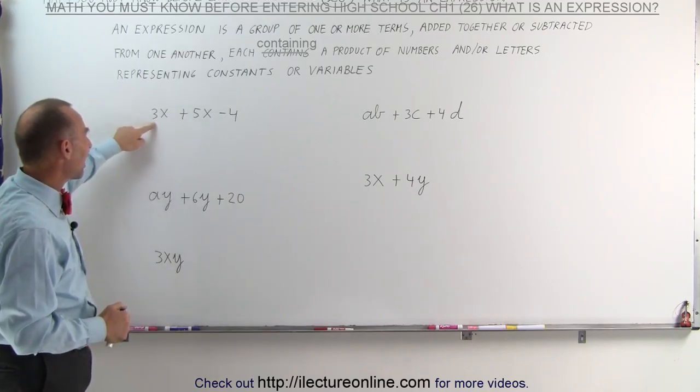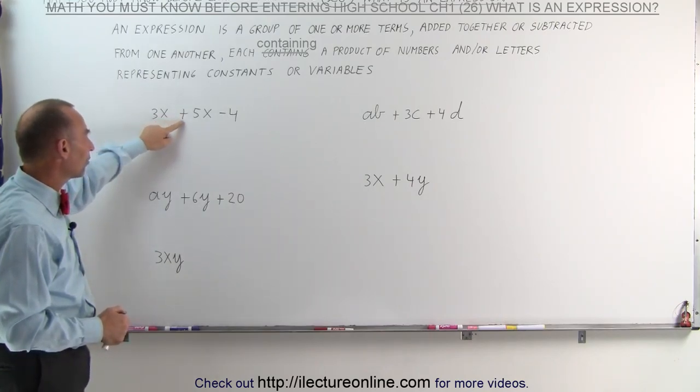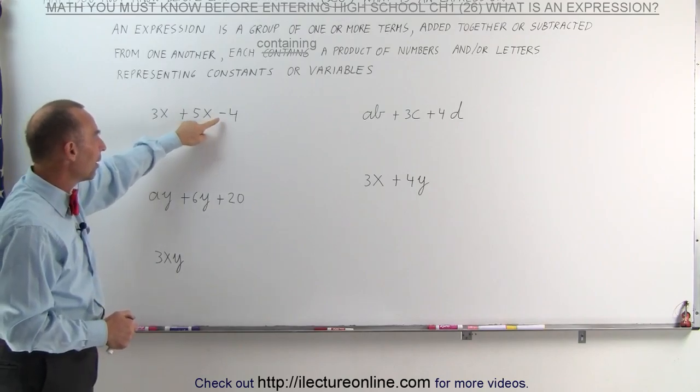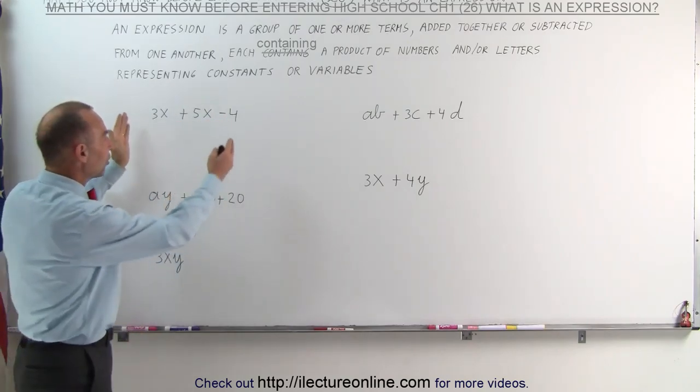So here we have 3 times some unknown variable, plus 5 times some unknown variable, minus 4. That forms an expression.